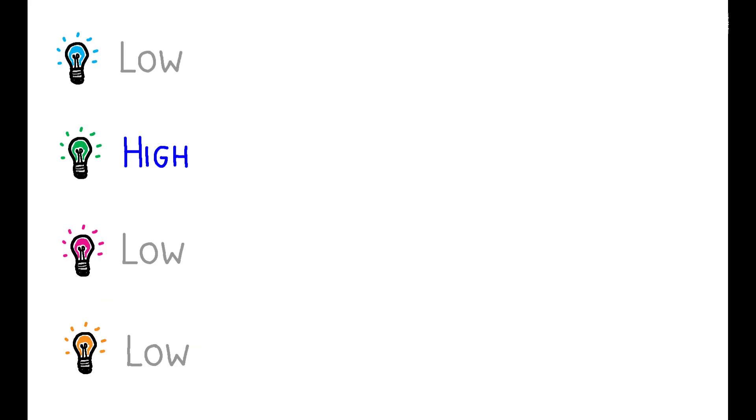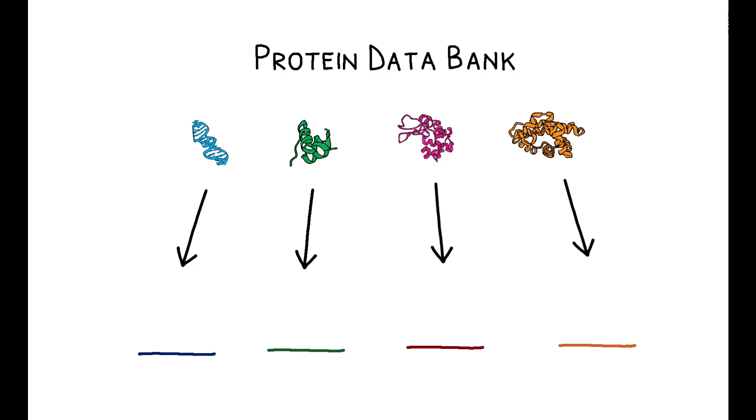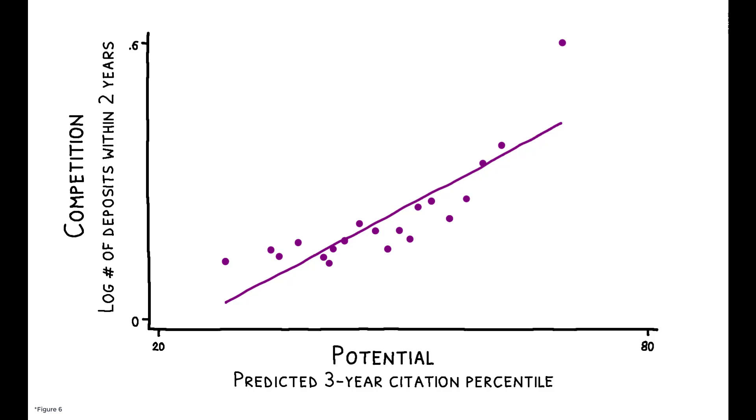So, what do the authors find? First, they show that high-potential projects are more competitive. The PDB assigns each protein to a similarity cluster based on its structure, and the number of deposits within a cluster is an indication of the crowdedness, or competition, for a given protein. This figure shows that high-potential projects are more crowded. Relative to low-potential ones, they have about 30% more deposits in their cluster.